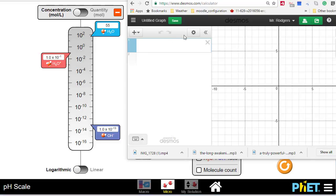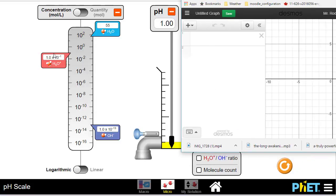In Desmos, we're going to add a table that will keep track of the pH and the hydronium ion concentration in moles per liter.